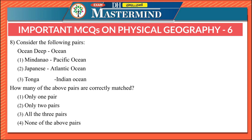The eighth question asks to match ocean deeps with their oceans: Mindanao–Pacific Ocean, Japanese–Tonga, Atlantic Ocean, Indian Ocean. The right option is only one correct pair, because Mindanao is correctly matched with the Pacific Ocean. The other deeps listed — Japanese and Tonga — are also located in the Pacific Ocean, not the Atlantic or Indian Ocean.